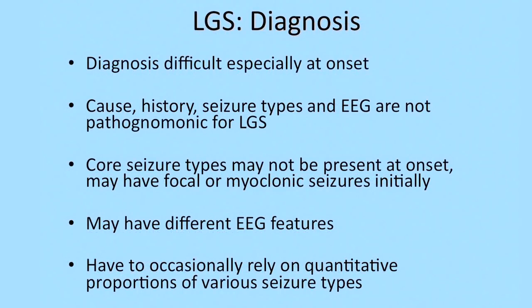The diagnosis relies heavily on the EEG, but although it sounds easy to diagnose since you have all these features, the features may not be very clear early at onset. Because the cause, the history, the seizure types, and the EEG features are not pathognomonic for Lennox-Gastaut syndrome — they are shared by other epilepsy syndromes and can occur in other seizure types.